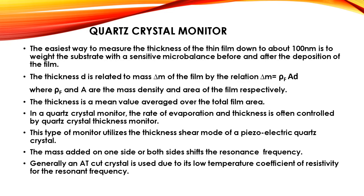The easiest way to measure the thickness of a thin film down to about 100 nanometers is to weigh the substrate with a sensitive microbalance before and after the deposition of the film. The thickness d is related to the mass delta m of the film by the relation: delta m = rho_f × A × d, where rho_f and A are the mass density and area of the film respectively. The thickness is a mean value averaged over the total film area.